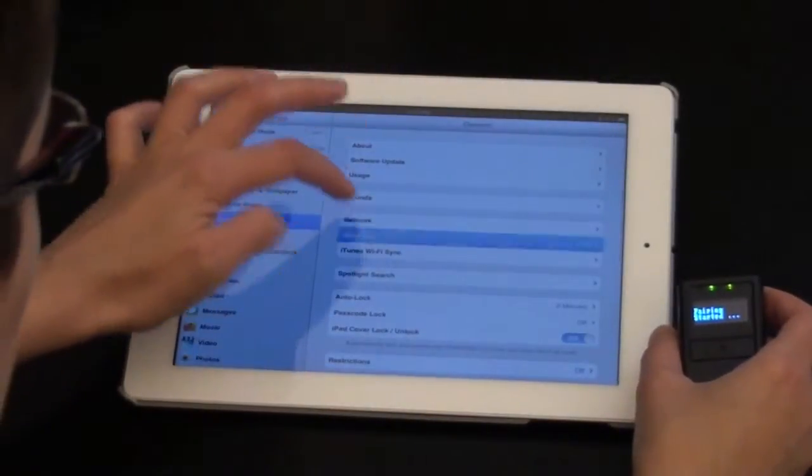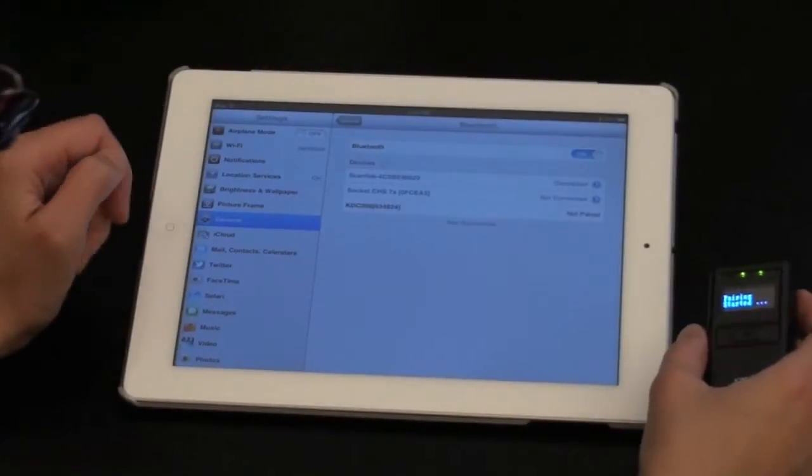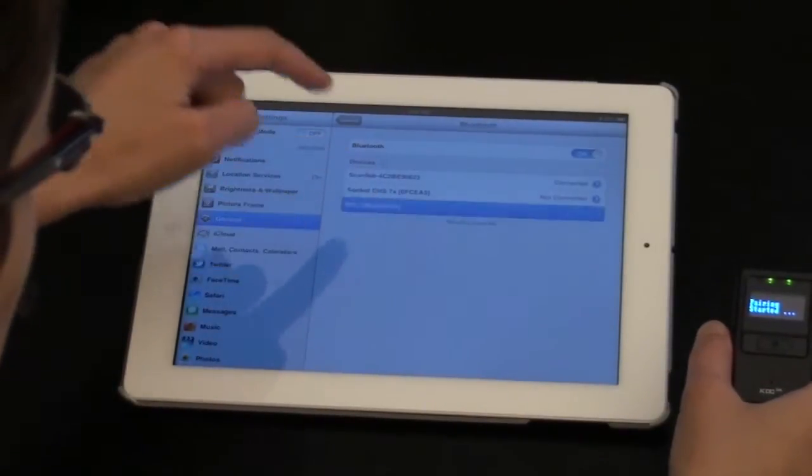Go to Settings, go to Bluetooth, and it should find it. There you go, KDC 200 right here on the bottom.